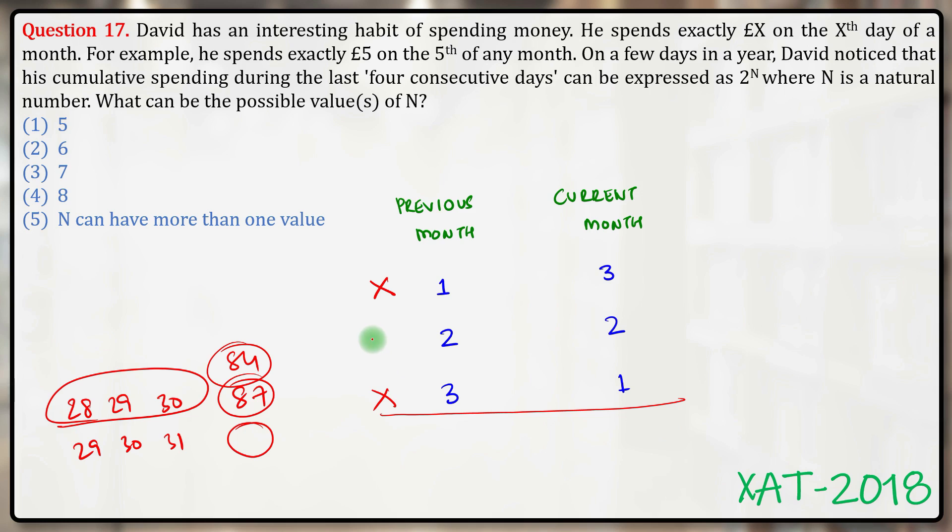with only one possible case, if at all, which is two dates from the previous month and two dates from the current month.